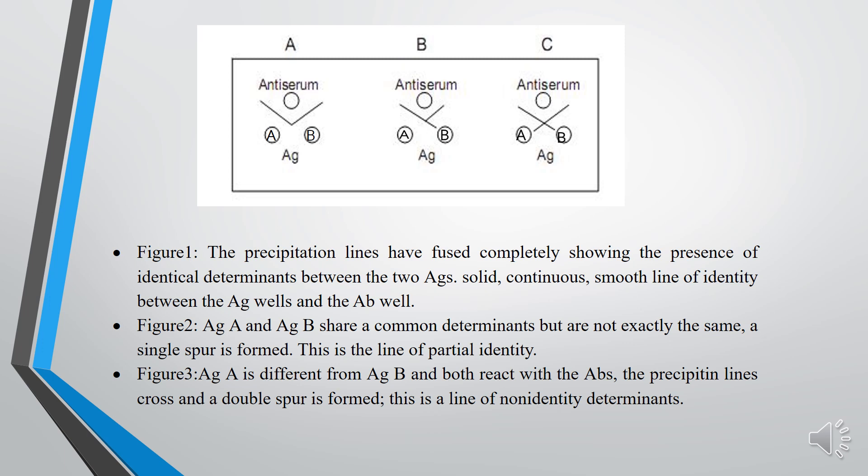Figure 3: Pattern of Non-Identity. Antigen A is different from antigen B and both react with the antibodies. The precipitant lines cross and a double spur is formed. That is, the two antigens are immunologically unrelated.